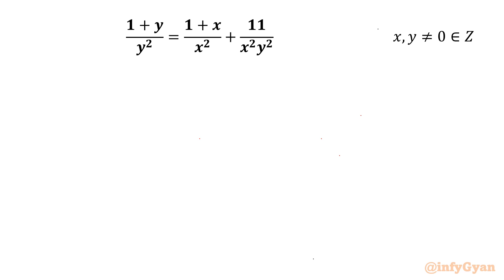Welcome back to Infigr, my dear friends. Today in this video we are having one very interesting and challenging Diophantine equation. It is: 1 plus y over y squared equals 1 plus x over x squared plus 11 over x squared y squared, where x and y are nonzero integers.